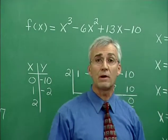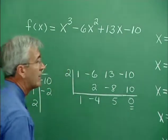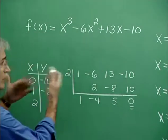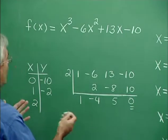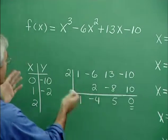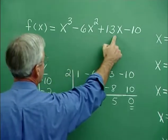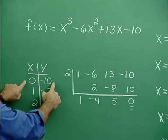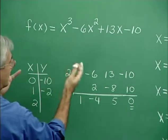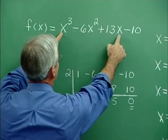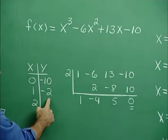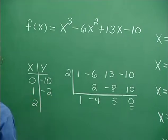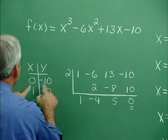Here we have a third degree polynomial function. We'd like to identify the three linear factors and the three zeros. We begin by perhaps thinking about f(0): when x is replaced with zero, we get -10. Then f(1) is easy to identify — replacing x with 1 gives 1 - 6 + 13 - 10, which equals -2. So one maps to -2. Zero is at -10, one is at -2 — the graph is approaching the x-axis.